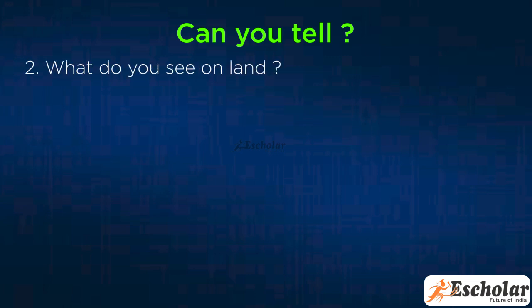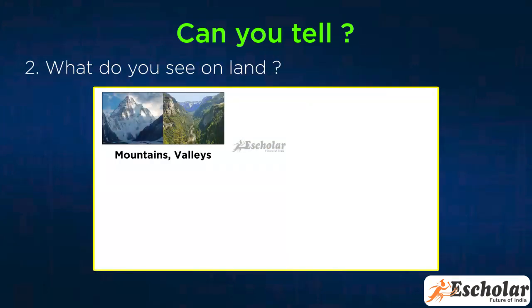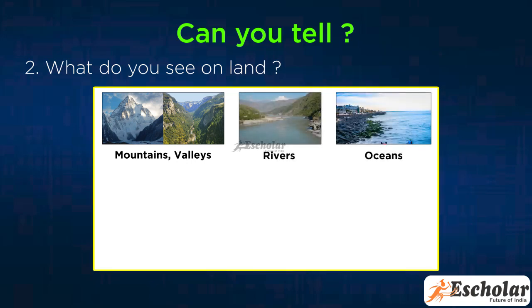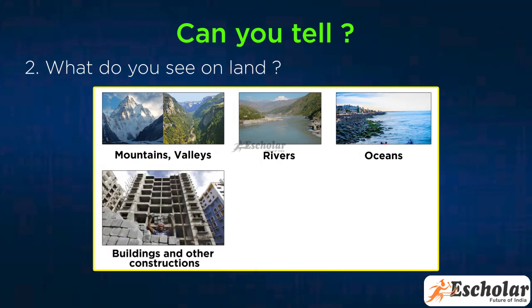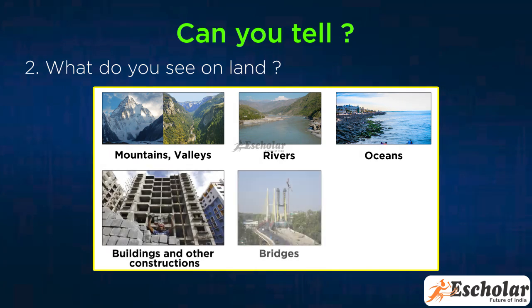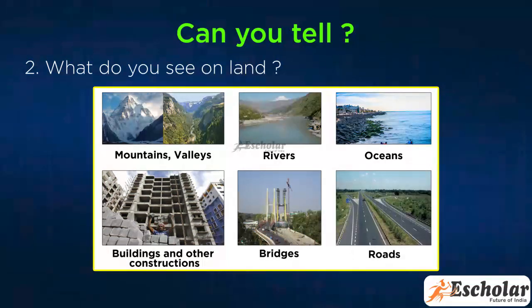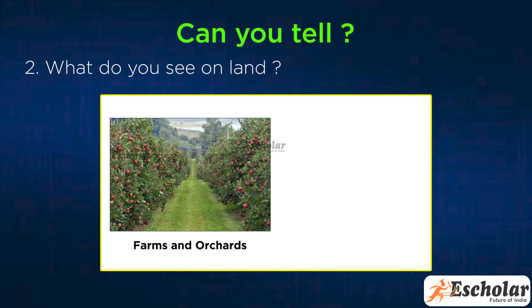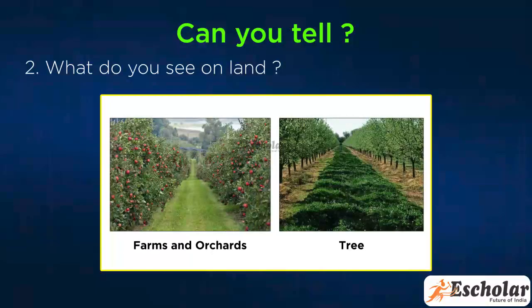Second, what do you see on land? Mountains, valley, rivers, oceans can be seen on the land. In the urban region, we can see buildings and other constructions, bridges, roads, etc. In rural areas, we can see farms and orchards and some tree cover.